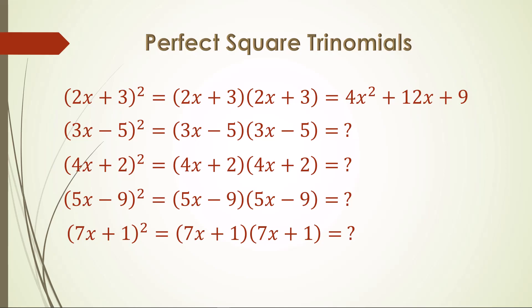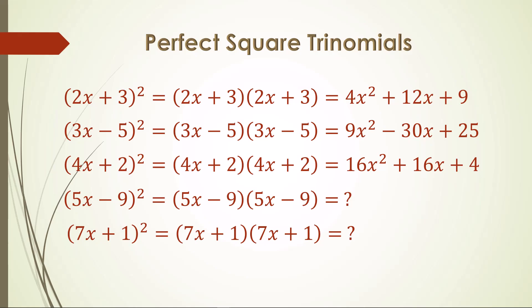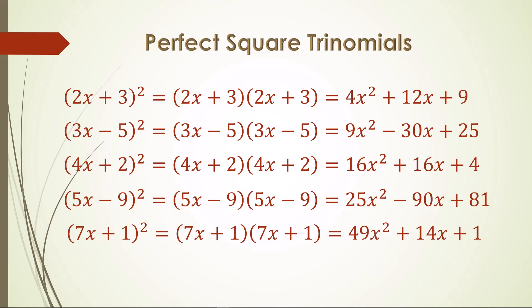Pause the video to work out each of these examples. Here we have 3x minus 5. The square of 3x is 9x squared for the first term. Twice 3x and negative 5 is negative 30x for the middle term. And then the square of negative 5 is positive 25. The answer for 4x plus 2 squared is 16x squared plus 16x plus 4. The answer for 5x minus 9 squared is 25x squared, twice 5x times negative 9, and 9 squared, or 81. This last one, 7x plus 1 squared, results in 49x squared plus 14x plus 1.